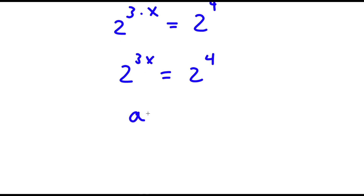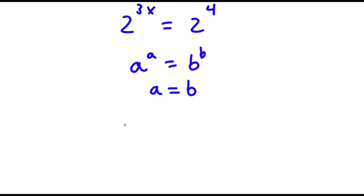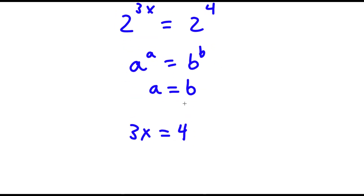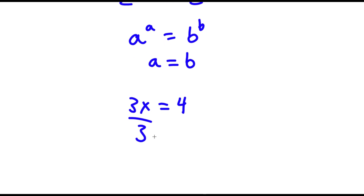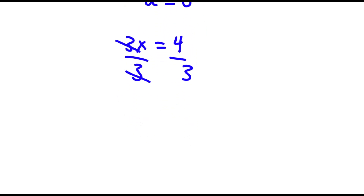Now, if I have something in the form a to the power of m is equal to a to the power of n, then this means that m is equal to n. So in this case, 3x is equal to 4. Now, to solve this, all I have to do is simply divide both sides by 3, and I get x is equal to 4 over 3.